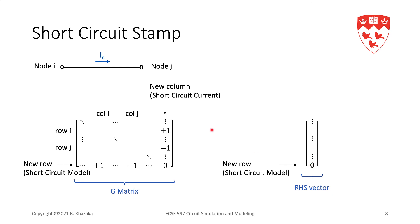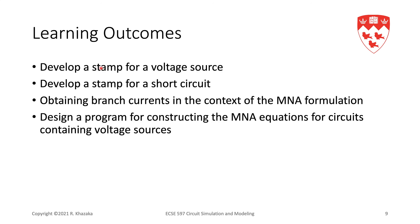After this video, you should be able to develop a stamp for a voltage source and a stamp for a short circuit. We now have a systematic way of obtaining branch currents — you can easily add branch currents as variables by inserting a short circuit. In the program we're designing as a circuit simulator, you can now incorporate voltage sources and short circuits into the automatic construction of MNA equations.